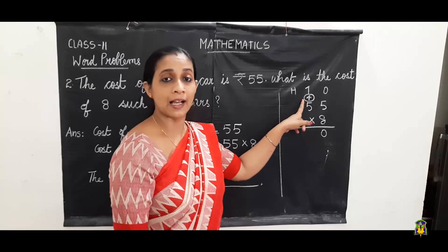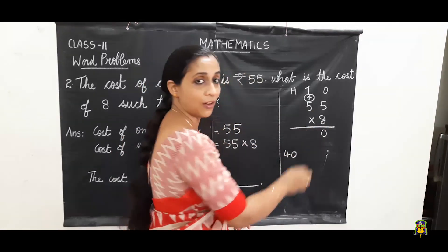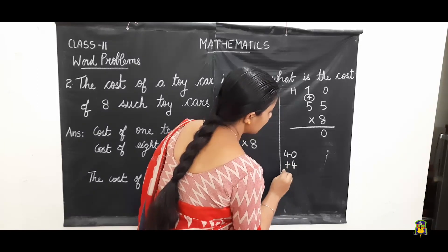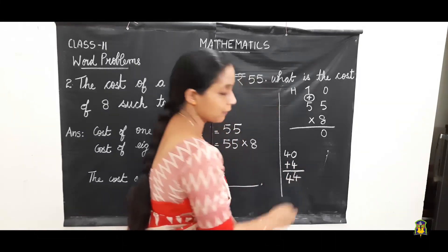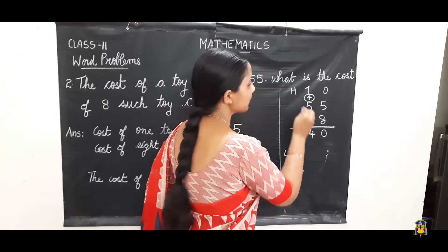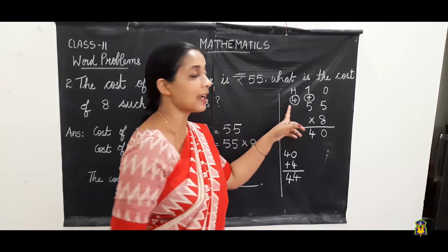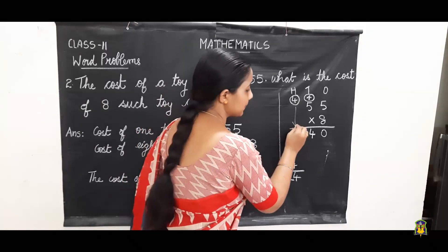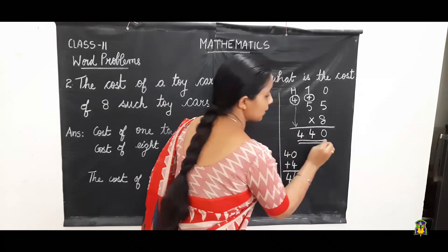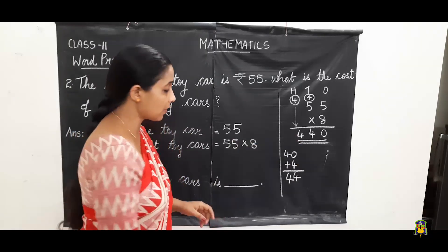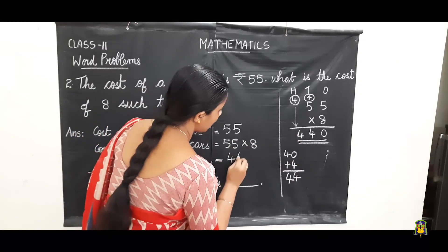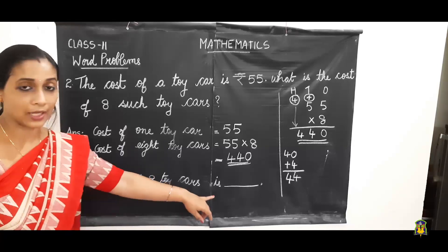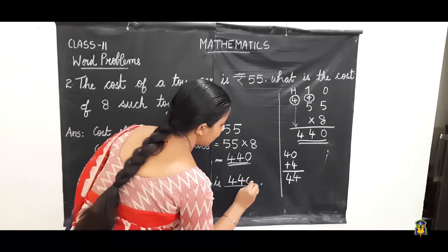Again eight fives are forty, then forty plus four — we have to add this carryover, that is forty plus four, that is forty-four. Again we write the four here and four is carryover to the next place, that is hundreds place. In hundreds place we don't have a number to multiply, so we bring down this number. So four forty — the cost of eight toy cars is four hundred and forty rupees.